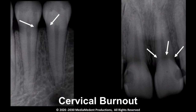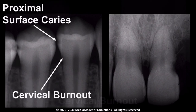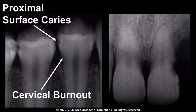Cervical burnout may have the appearance of a fan-shaped, diffuse, and ill-defined radiolucency associated with posterior teeth shown in the illustration to your left. It may take on the appearance of a diffuse and ill-defined banding in the cervical region of anterior teeth shown in the illustration to your right. You should expect to see cervical burnout associated with the cervical region of almost all teeth that have a good level of bone support.